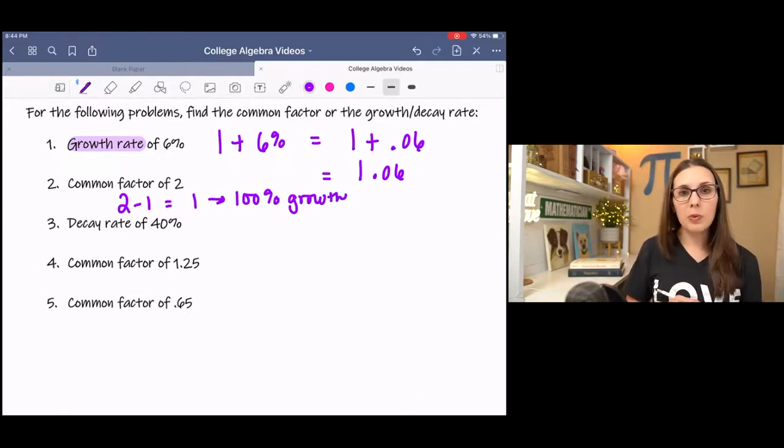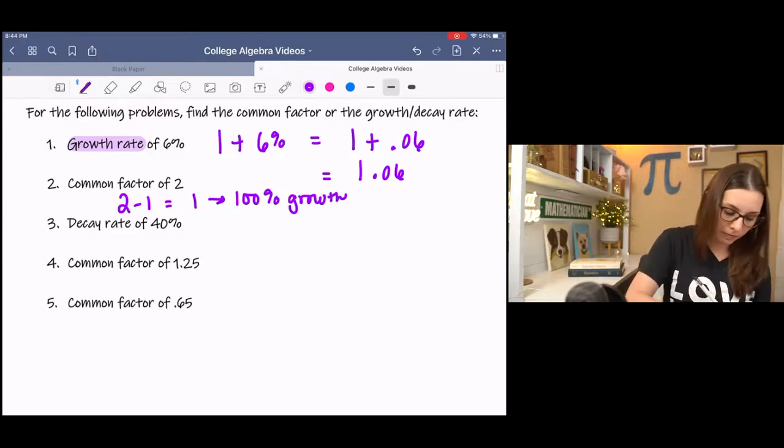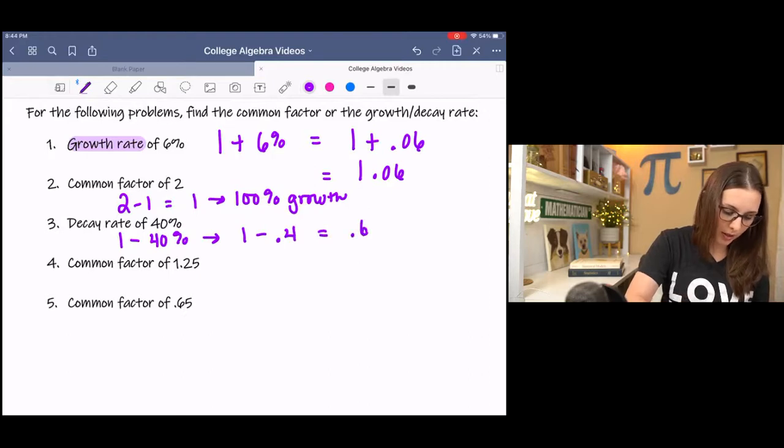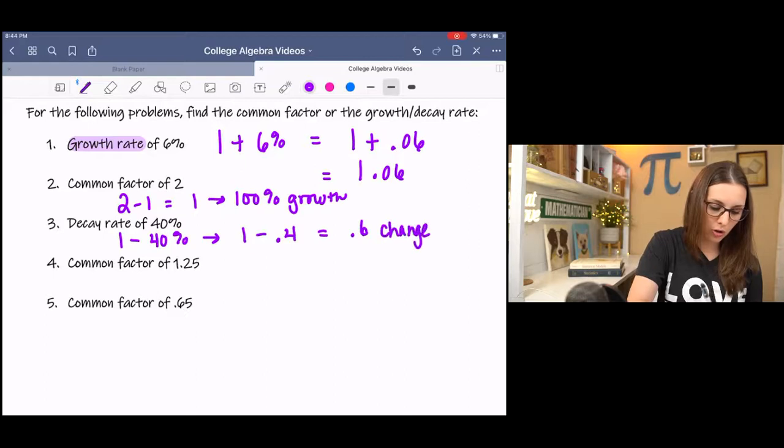In the next example, we have a decay rate of 40%. Decay means less than 1. So we're going to be subtracting 40%, which is 0.4, and that's going to equal 0.6 for our change factor.